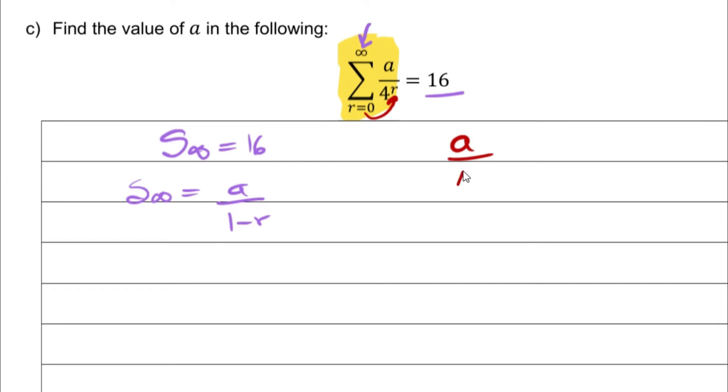So we have a, which is a, then a over 4, and a over 16. We just got three terms. From here we understand that our a equals a because that's our first term.